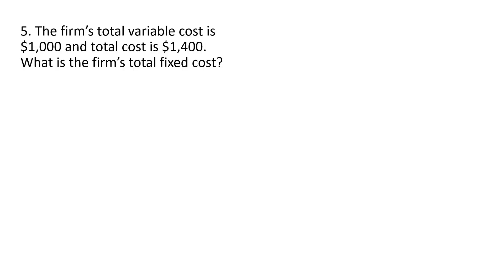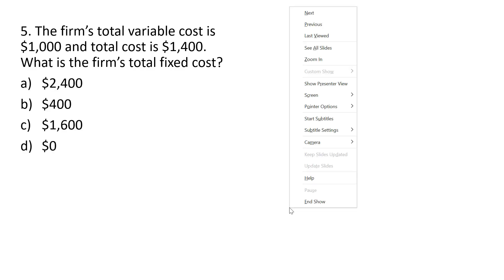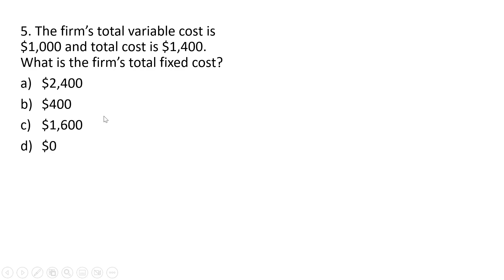Number five: the firm's total variable cost is $1,000,000 and total cost is $1,400,000. What is the firm's fixed cost? The fixed cost will just be the difference, or $400,000. So the correct answer here is answer choice B.